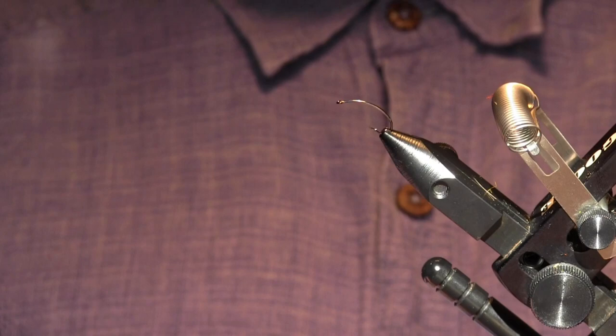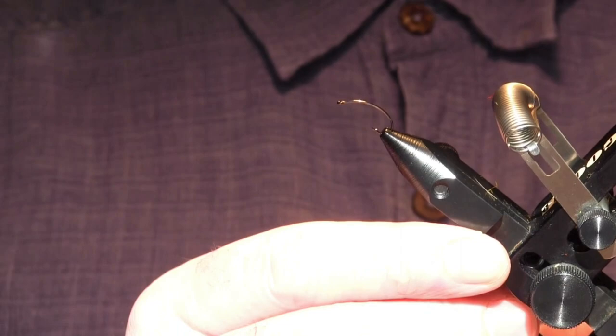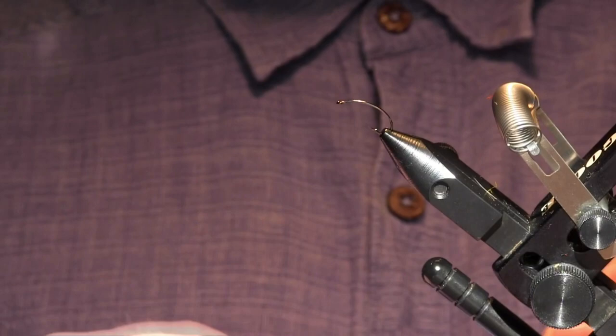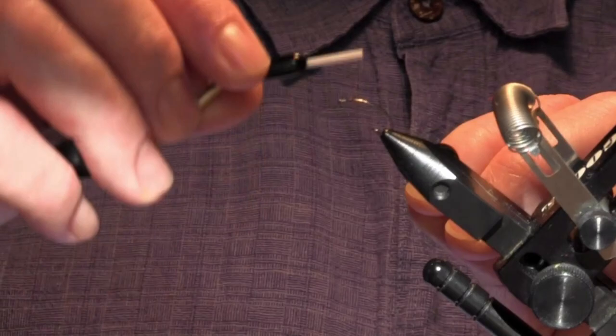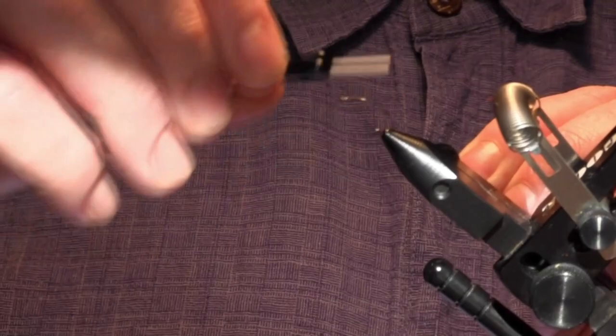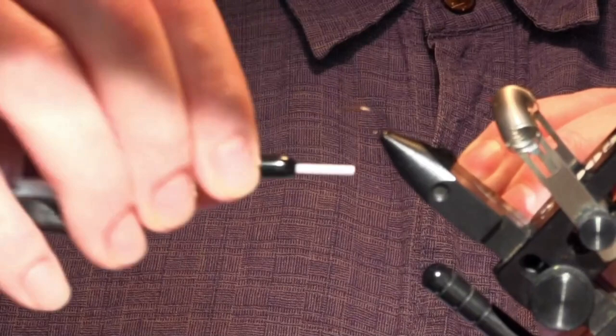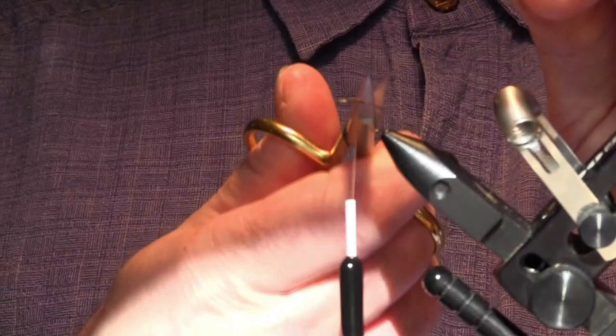First off, I'm gonna put my Daiichi 1167 size 12 hook in the vise and orient it so that the top here is flat. I've got 6-op brown thread and I'm gonna start about a hook high and a half away from the front of the hook. I'm gonna wrap all the way to just beyond that bend and then wrap back to about center, maintaining an even underbody and even thread wraps.